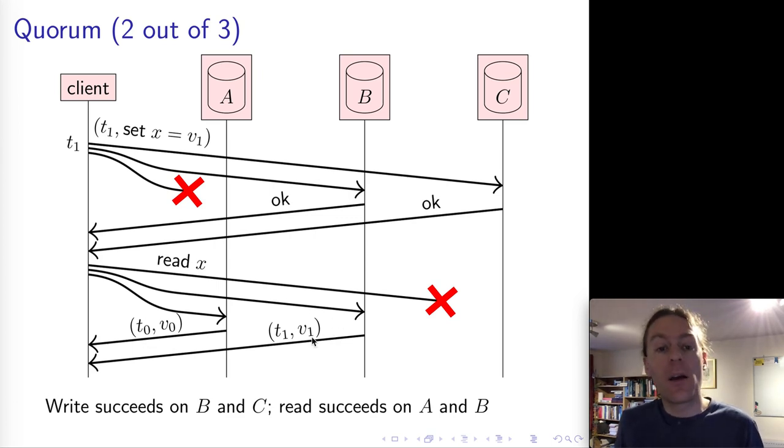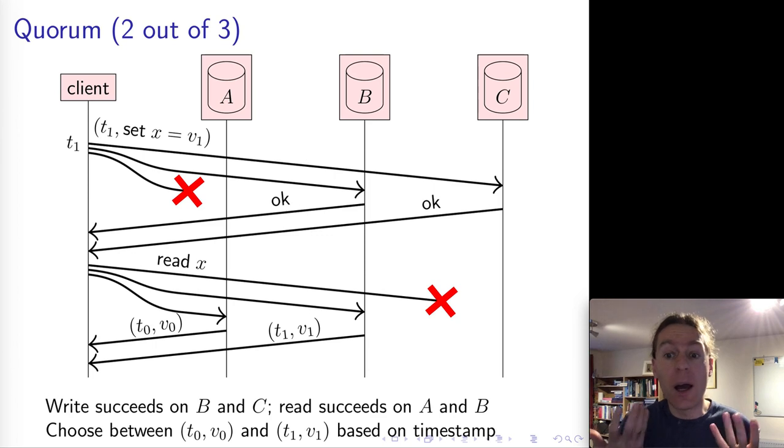And so now the client can use the timestamps T0 and T1 to figure out which is the more recent update. And this now allows the client to know what the correct response should be that it returns to the application. And the application is happy because it has read-after-write consistency.